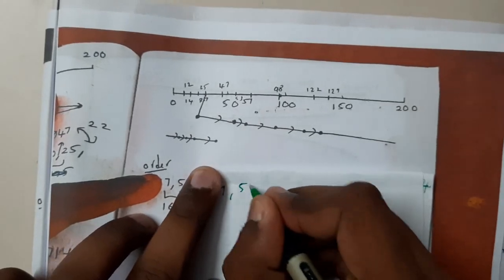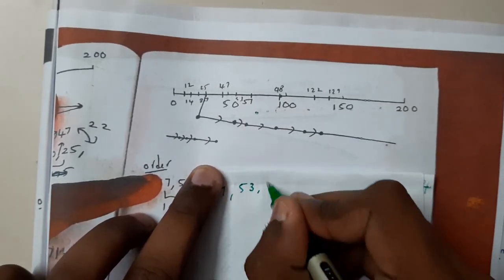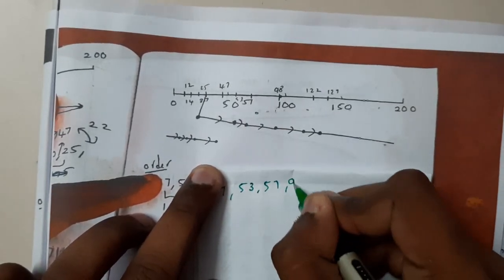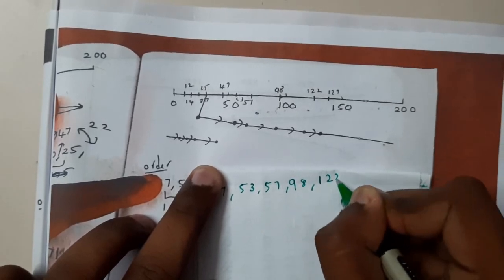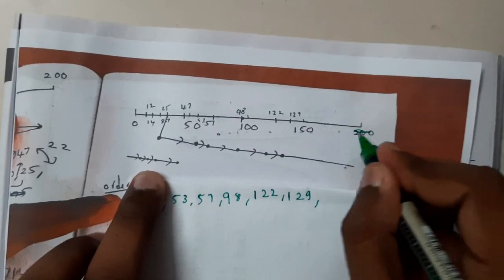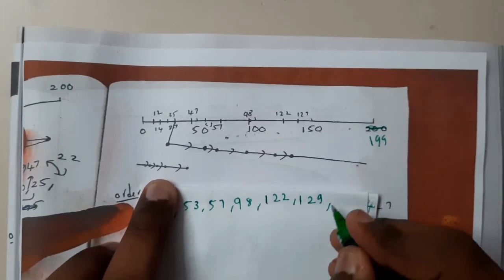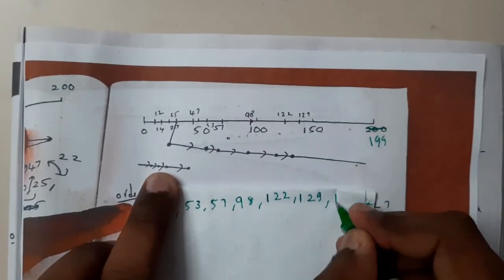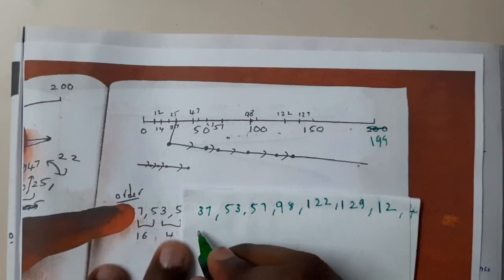Initially, we started at 37. After that, we reached 53, 53 to 57, 57 to 98, 98 to 122, 122 to 129. After that, we reached 199, but it's not a direct approach. We reached directly to 12, and then we reached 12 to 14, 14 to 25, 25 to 47.